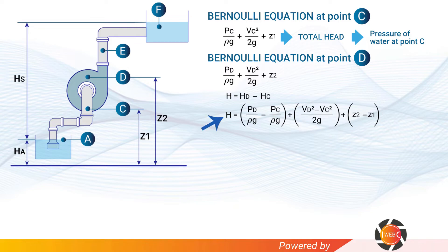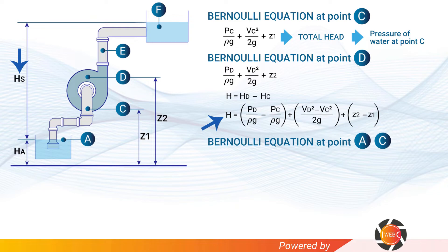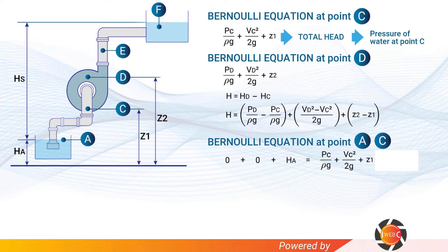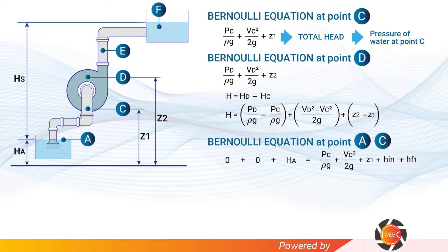The total height h equals hA plus hs. Applying the Bernoulli equation between point A and point C: the pressure at A is zero, velocity at A is zero, leaving hA, which equals pc/(ρg) + vc²/(2g) + z1. Between points A and C there are losses due to water entering the suction pipe and due to friction inside the suction pipe, so the complete equation adds h_inlet plus hf1.